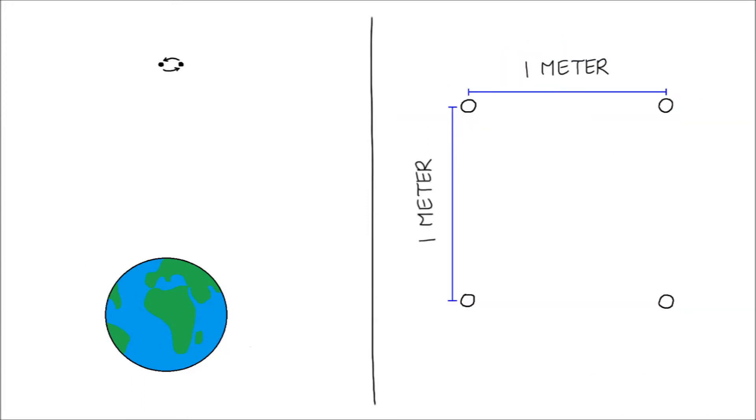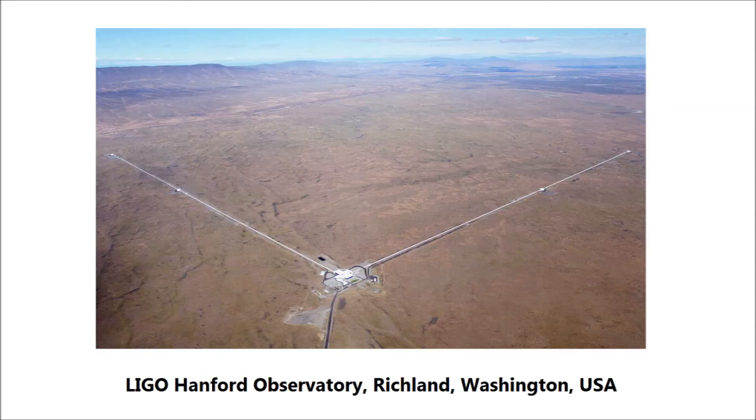Instead, we use light. Light has always the same speed. When we send two light beams along sides of a square, they return in the same amount of time. But if the square is deformed by a passing gravitational wave, one of the light beams returns quicker. This is essentially how LIGO works. Thank you for watching.